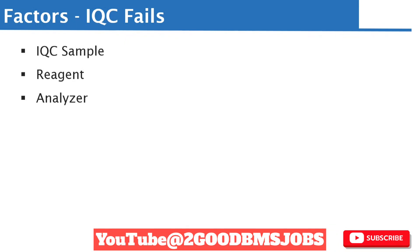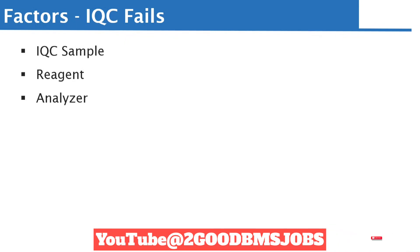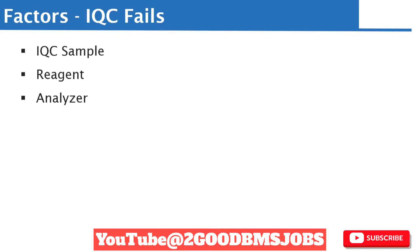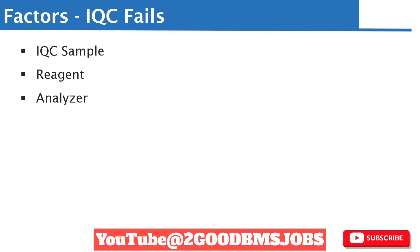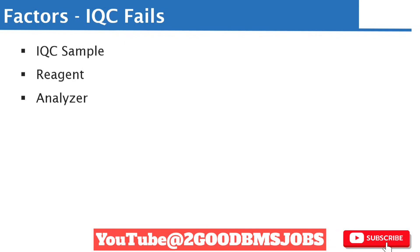Once you've done that, the next step is to look at what factors are likely to lead to the quality control sample failing. There are three main factors: number one could be the internal quality control sample itself, number two could be the reagent, and number three could be the analyzer. These are the three main factors associated with internal quality control sample failing.